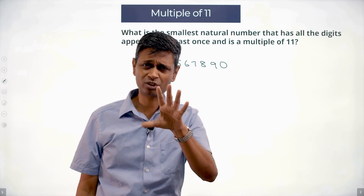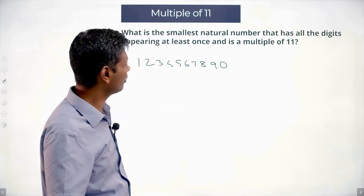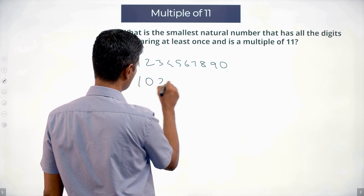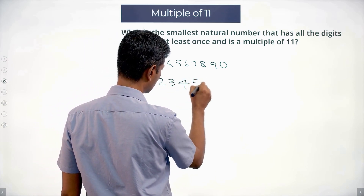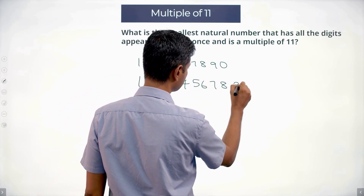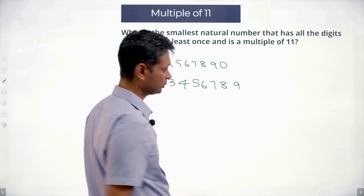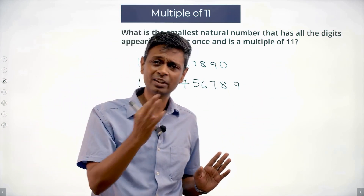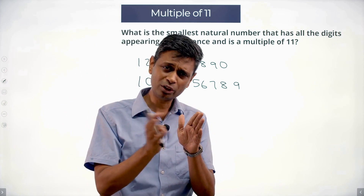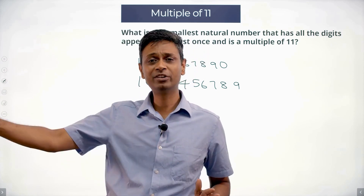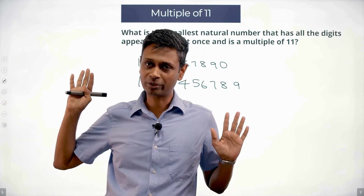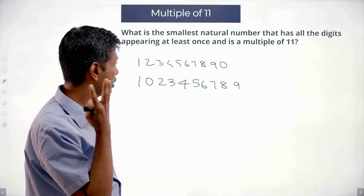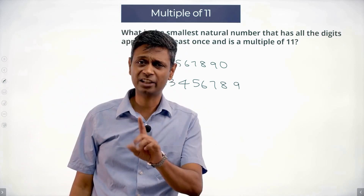I'm going to break this down further. I'm going to forget the multiple of 11 element. The smallest possible number is 1, 0, 2, 3, 4, 5, 6, 7, 8, 9. I can't start with 0, so I start with 1 and put all the smaller digits early, and the bigger digits at the end. That gives me the smallest possible 10-digit number with all digits appearing exactly once.